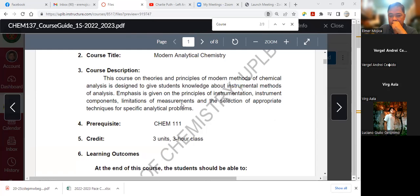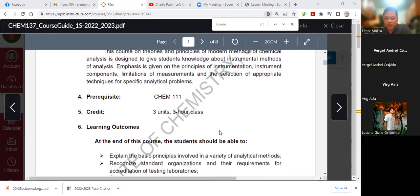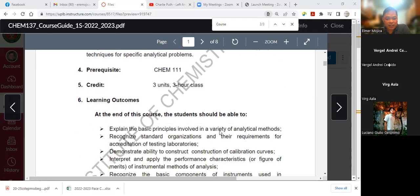At this level, emphasis is given on principles of instrumentation, instrument components, limitations of measurements, and selection of appropriate techniques for specific problems. You have CHEM 111 as prerequisite for this course. This is a three-unit, three-hour class. We meet Tuesday, Thursday.